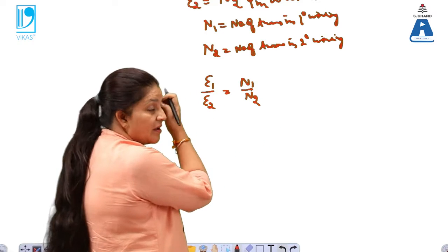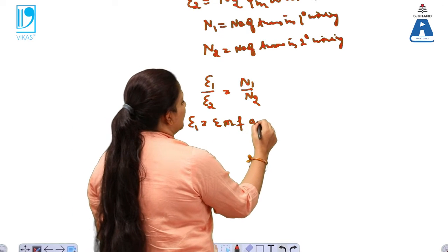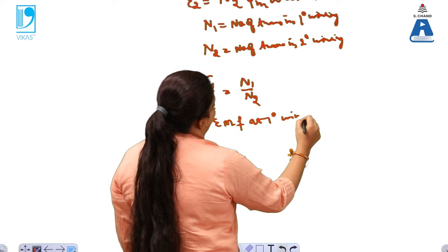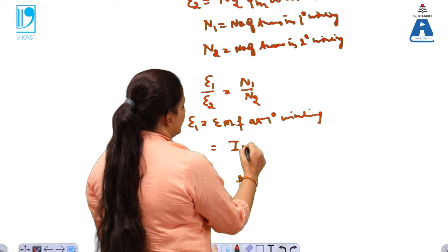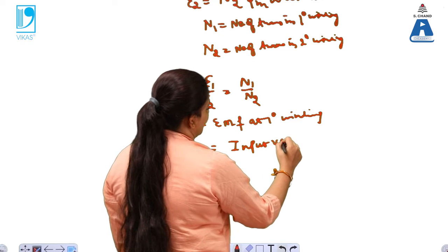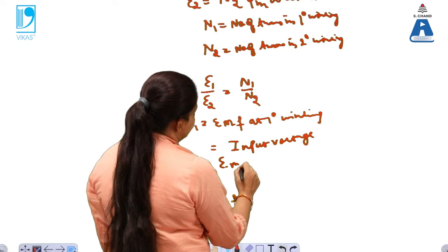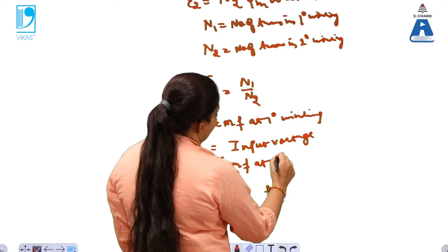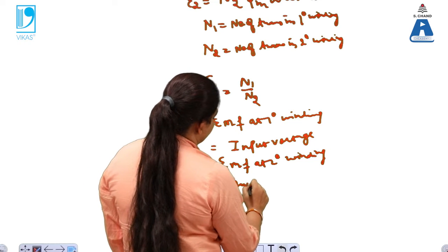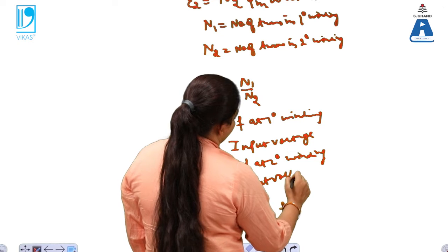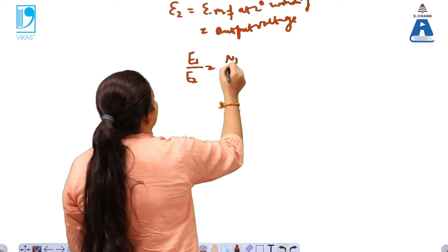E1 is the EMF at the primary winding, or the input voltage. E2 is the EMF at the secondary winding, which equals the output voltage. So from this we get E1/E2 = N1/N2.